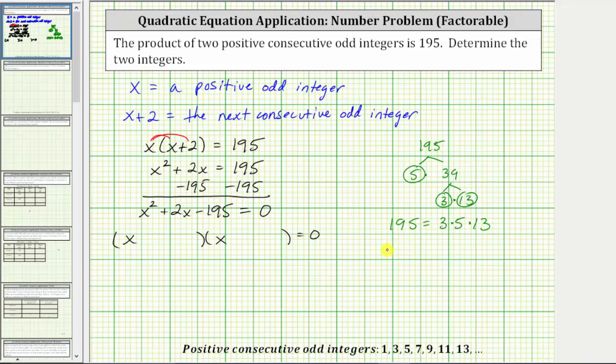And therefore, if we're looking for the factors of negative 195 that add to positive two, we can write negative 195 as negative 13 times positive 15. And because negative 13 plus positive 15 does equal positive two, these are the two factors that we need to factor the trinomial on the left side of the equation.